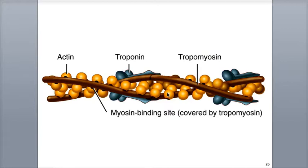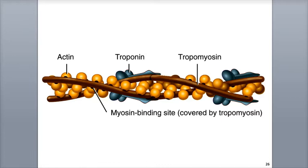The thin filaments are made primarily of the protein actin, shown here in yellow. But they also contain the two regulatory proteins, tropomyosin, shown by these brown strands, and troponin, shown in blue. Molecules of actin are twisted together into a helix to form a larger actin thin filament. Located on each actin molecule is a region called a myosin binding site, shown by these black dots on each of the actin protein subunits. The myosin binding site is the point of attachment for the myosin heads during muscle contraction. Here we see the myosin binding sites on actin exposed, allowing the myosin head to bind and make contact to the actin protein.